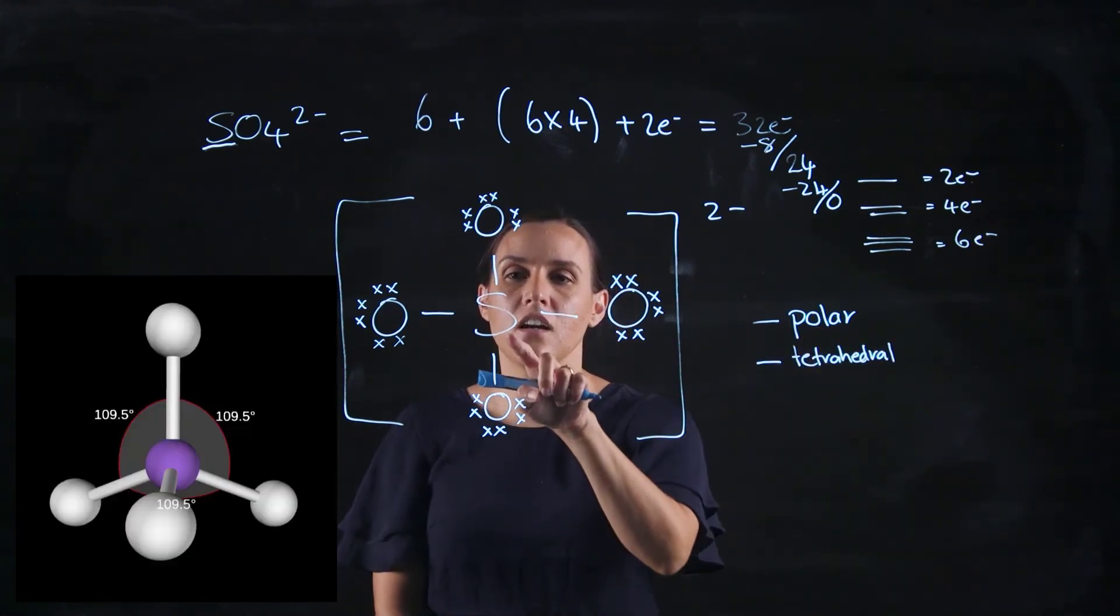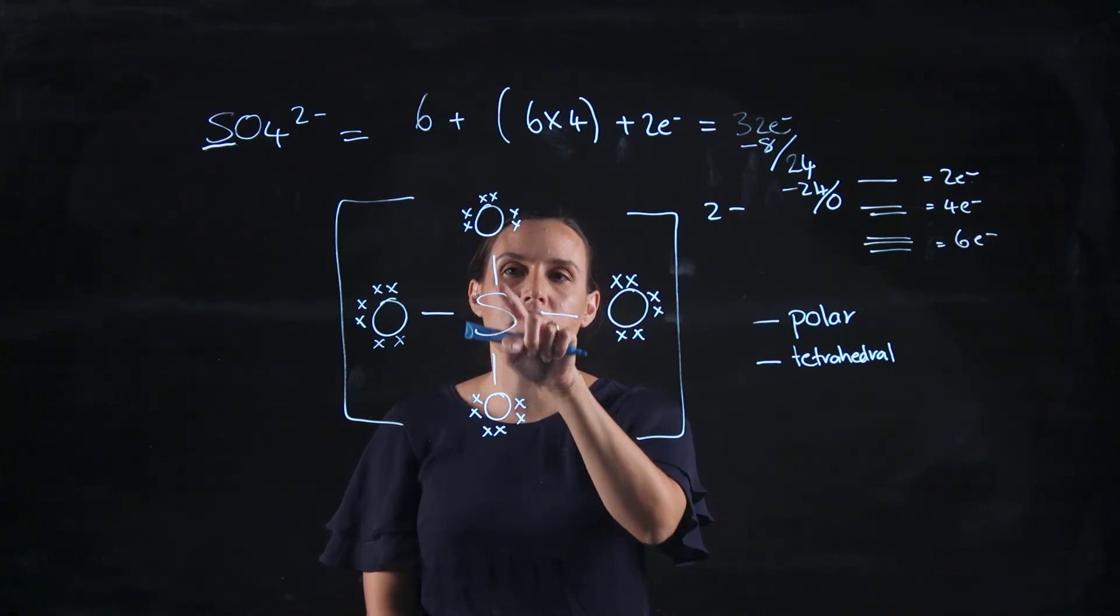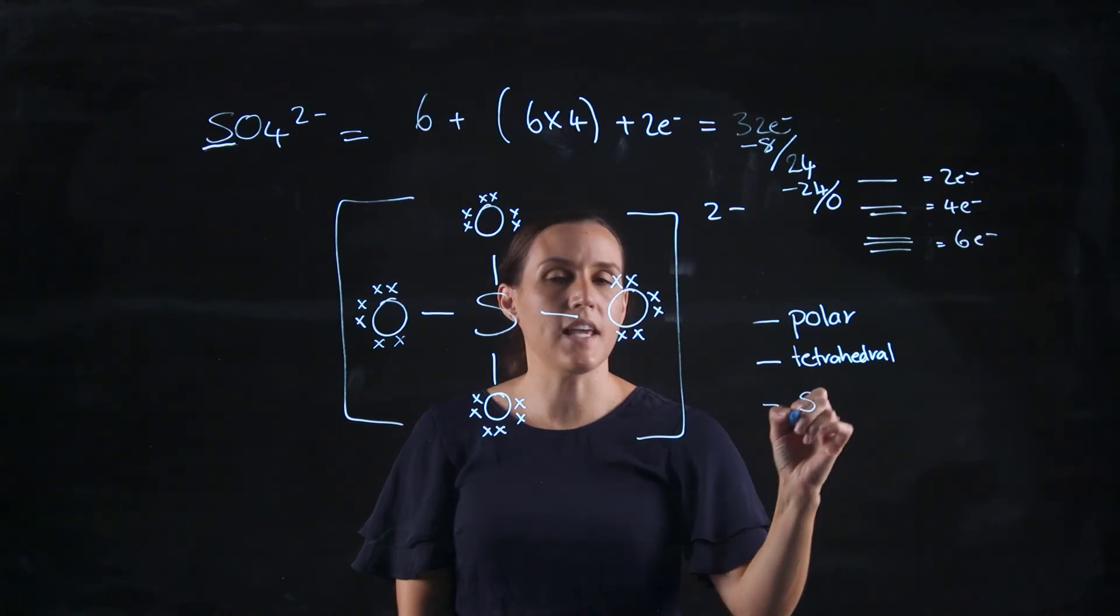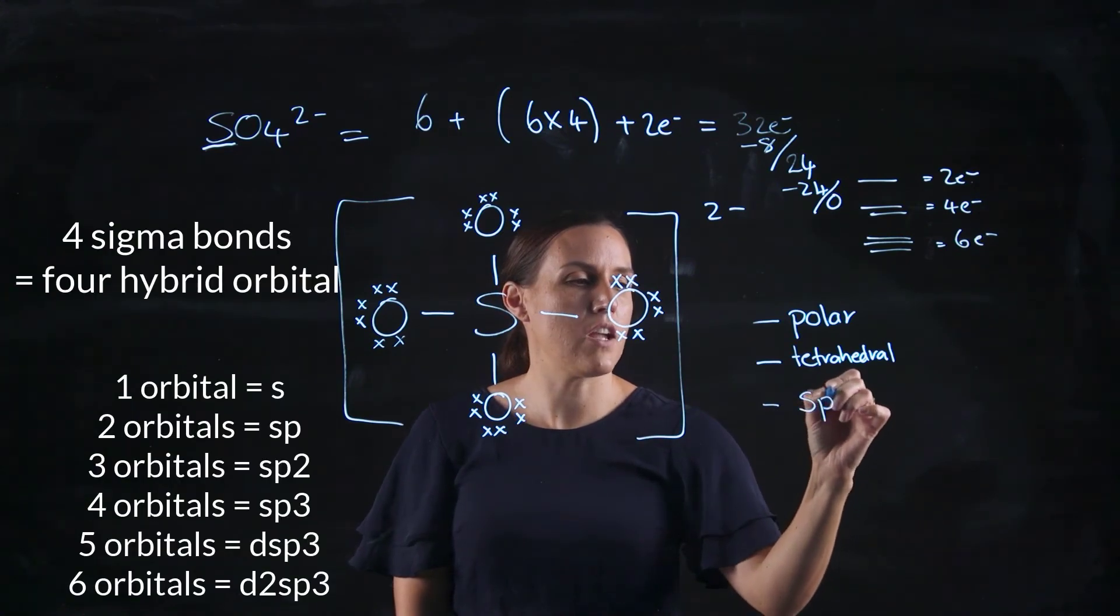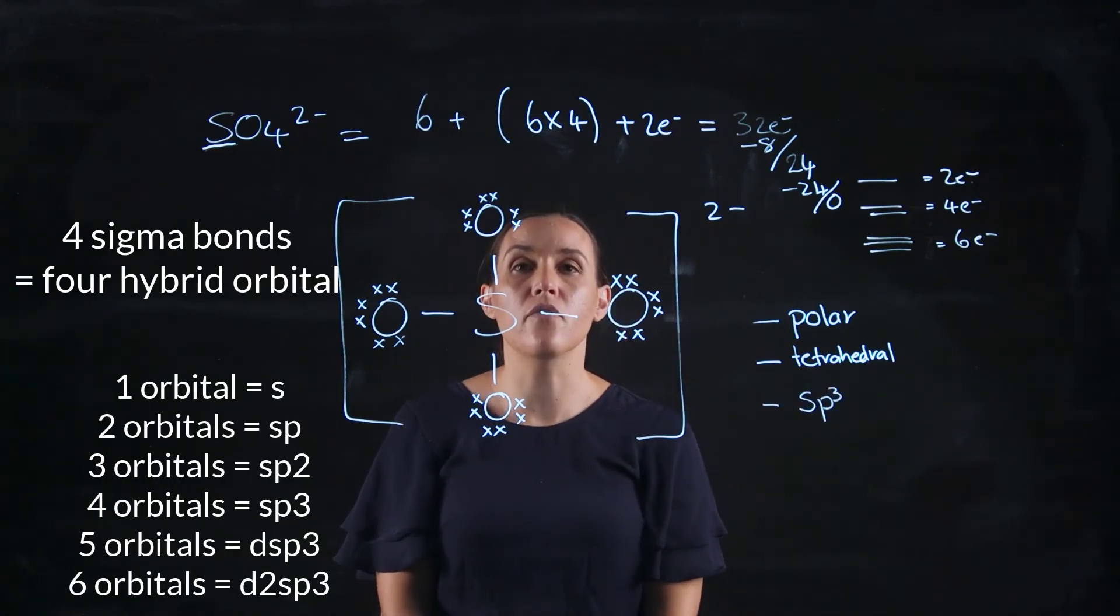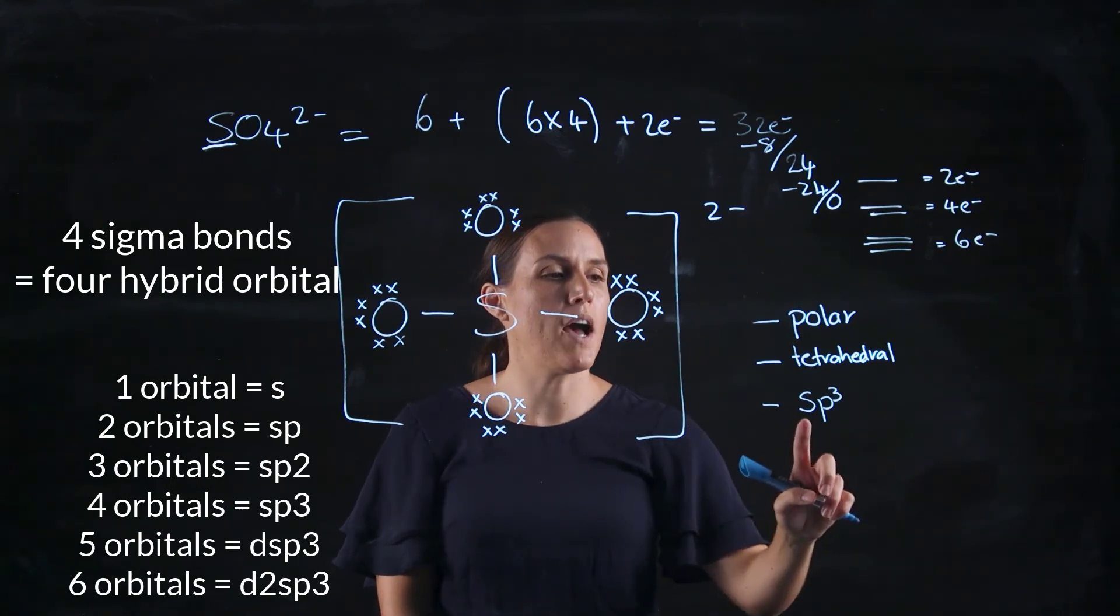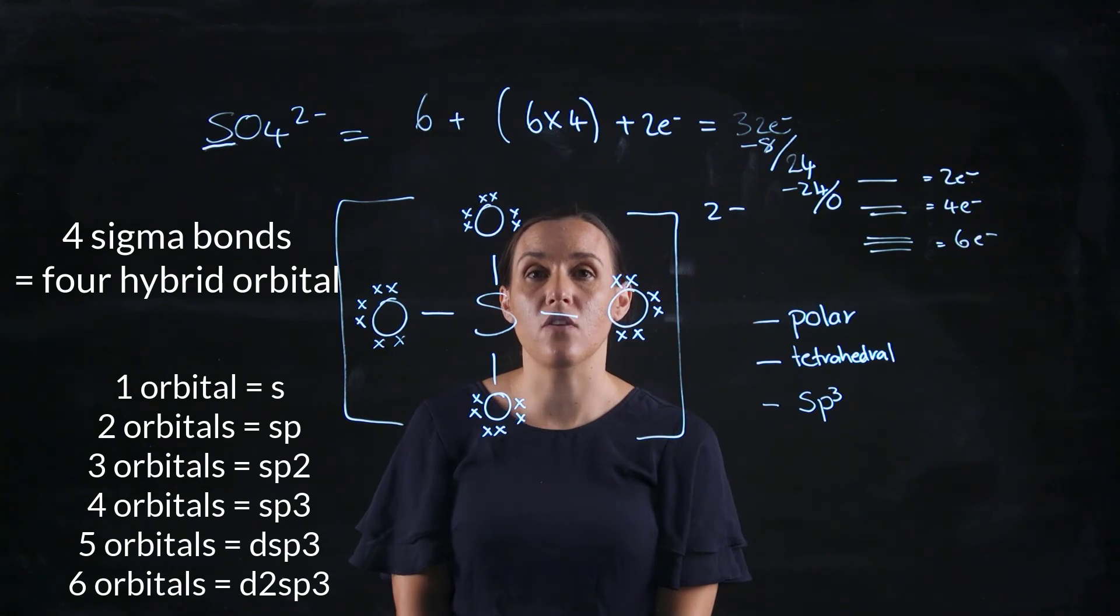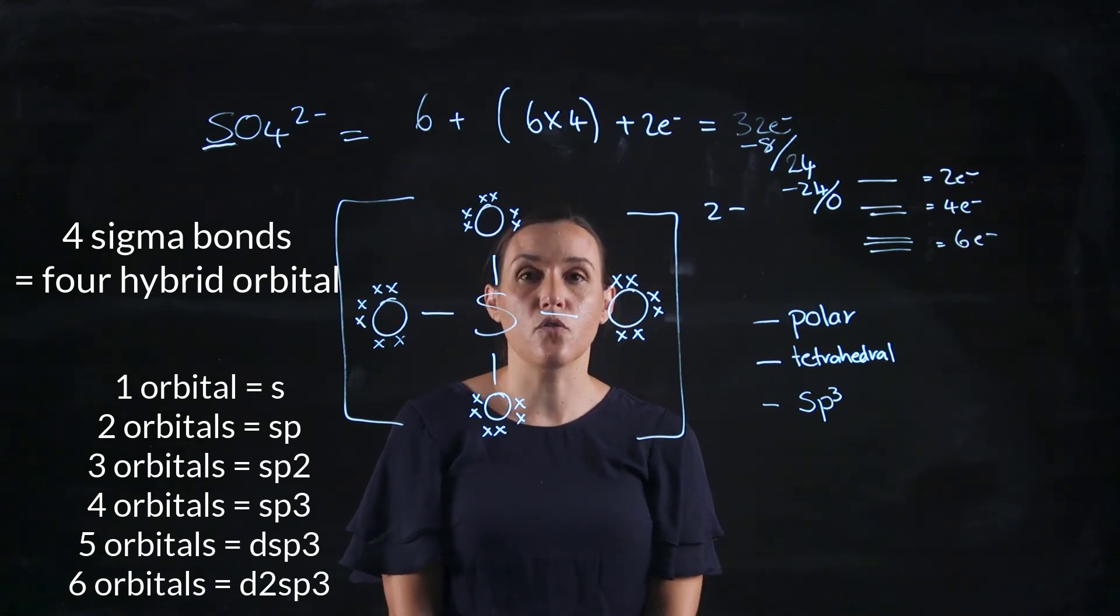And the hybridisation here, I've got a sulphur that's got 1, 2, 3, 4 sigma bonds. So I would have one s and three p's to get my four different orbitals. So I've got one and then three giving me four. So it would be an sp3 hybridised sulphur. So the orbitals produced from that sulphur.